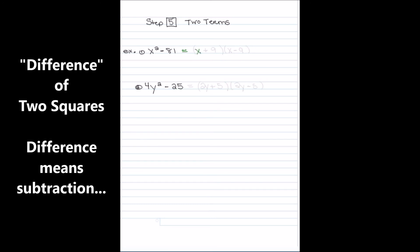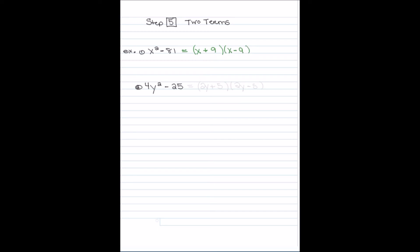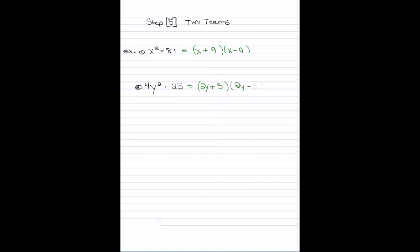If you have two terms, you can use one of three techniques. The first is called the difference of two squares. It's simple — you just take the square root of each term, making sure there's a subtraction sign in the middle. For the first example, the square root of x² is x and the square root of 81 is 9, so you write (x + 9)(x − 9). The next one: the square roots are 2y and 5, so you write (2y + 5)(2y − 5).